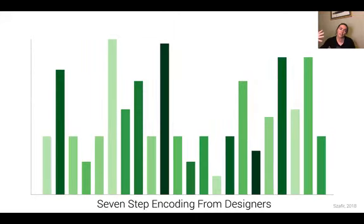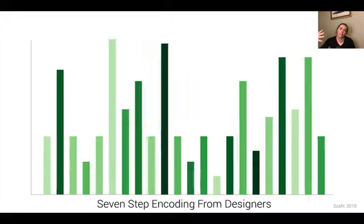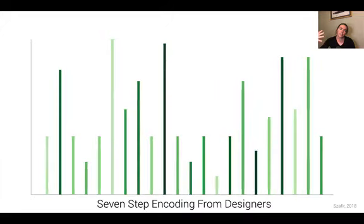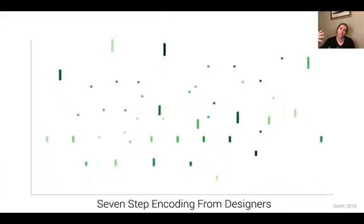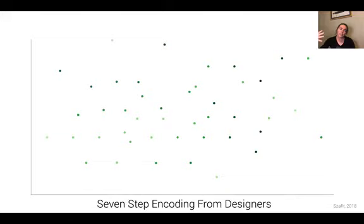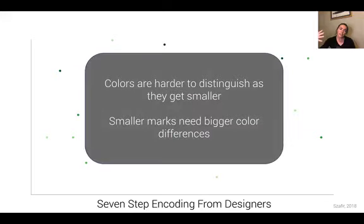One quick pro tip: colors that look good at one scale — like the bar charts we see here — can start to break down as we make our marks smaller or change the kinds of marks we're using. For example, in a scatterplot it's much more difficult to distinguish between different categories of green than when we had a wide bar chart. Colors are harder to distinguish as they get smaller, so if you're using smaller marks you'll want encodings with larger color differences.